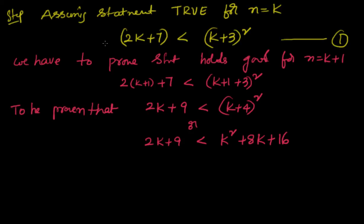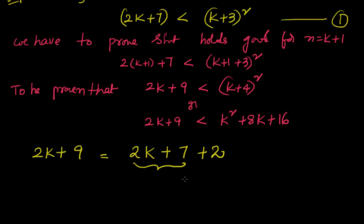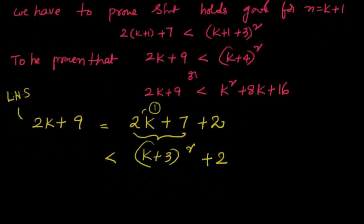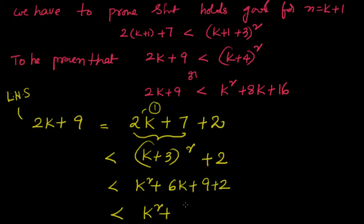I will start with LHS of k plus 1, that is nothing but 2k plus 9. If I take 2k plus 9 on the LHS, I can write it as 2k plus 7 plus 2. I know that 2k plus 7 is less than k plus 3 whole square. So LHS is 2k plus 9, that is nothing but equal to 2k plus 7 plus 2. But 2k plus 7 from equation 1 is less than k plus 3 whole square plus 2. So k plus 1 LHS is less than k plus 3 whole square plus 2, which is nothing but k squared plus 6k plus 9 plus 2, that is nothing but equal to k squared plus 6k plus 11.